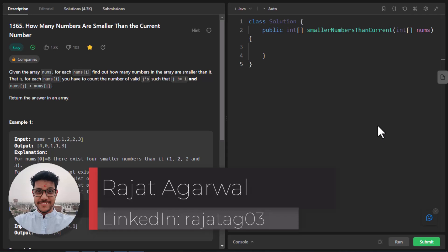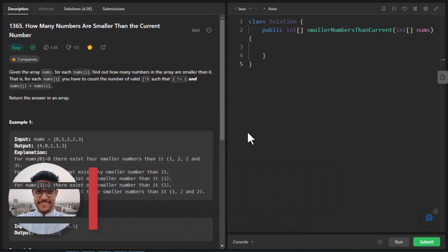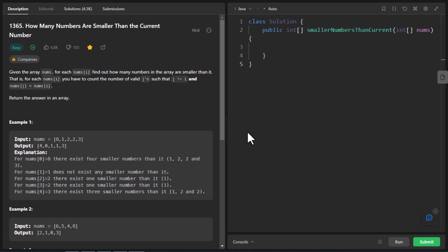My name is Rajat and today we'll be discussing the question how many numbers are smaller than the current number. In this question we are given the array numbers and for each value we need to find out how many numbers are in the array that are smaller than this particular number. At the end we need to return the answer in an array.